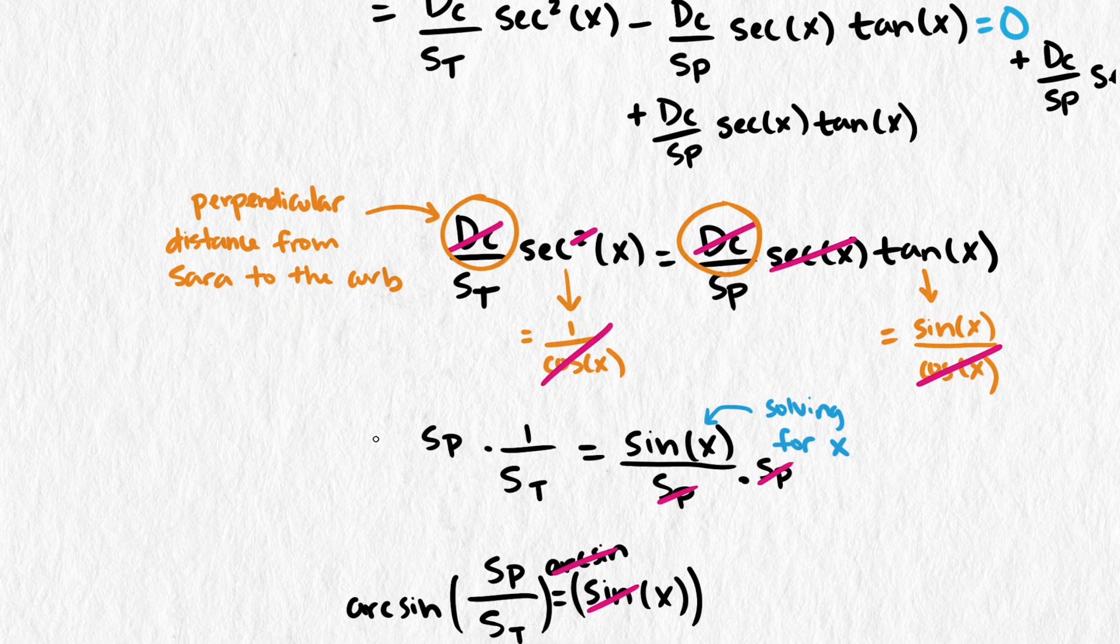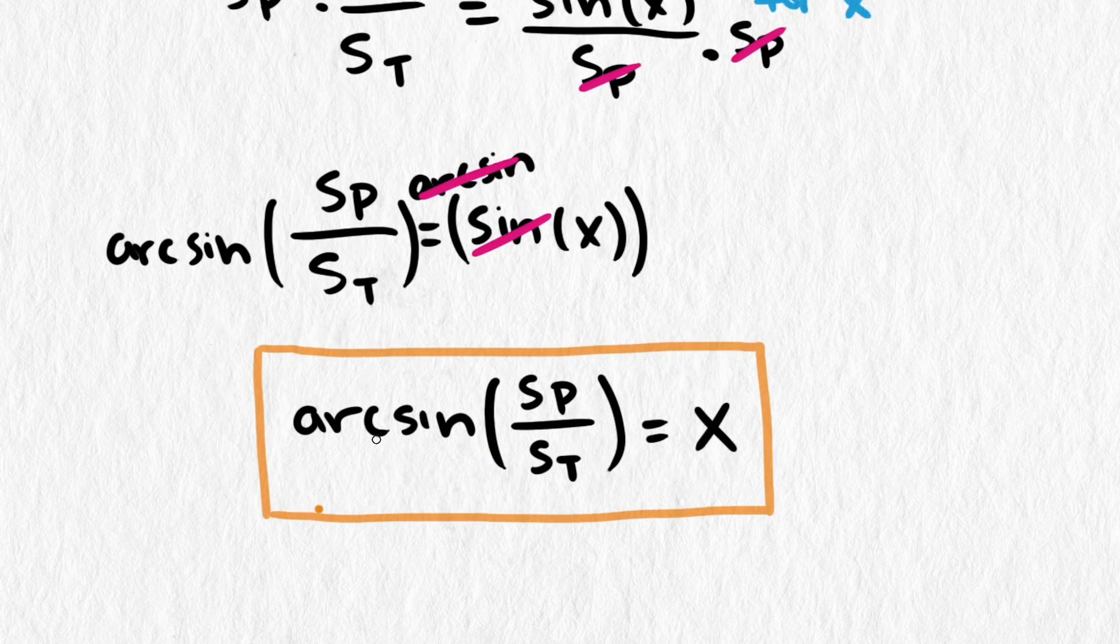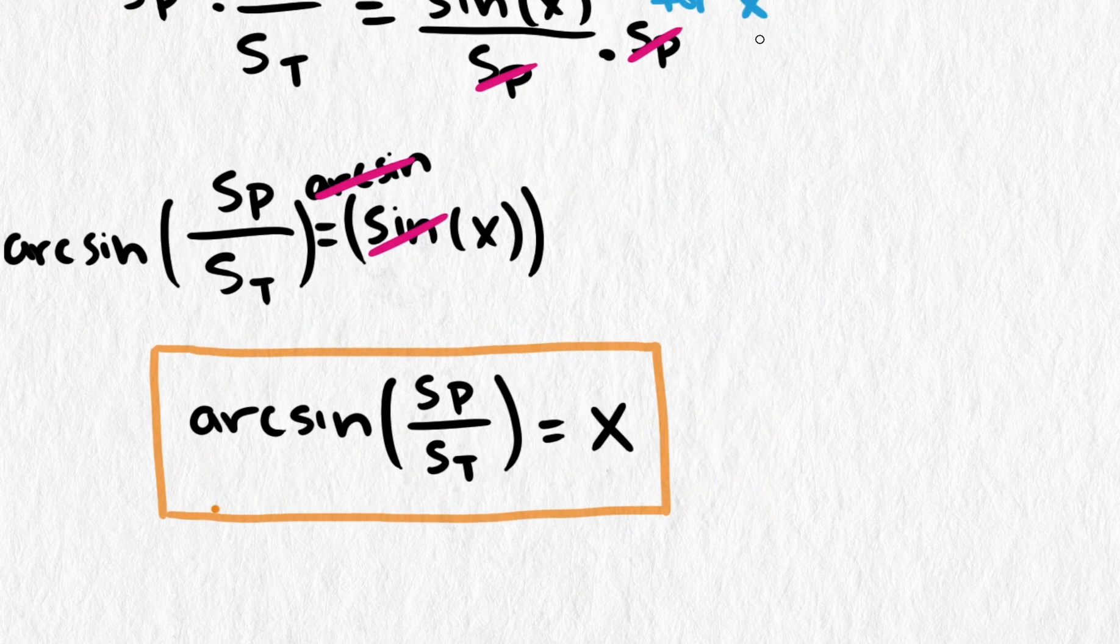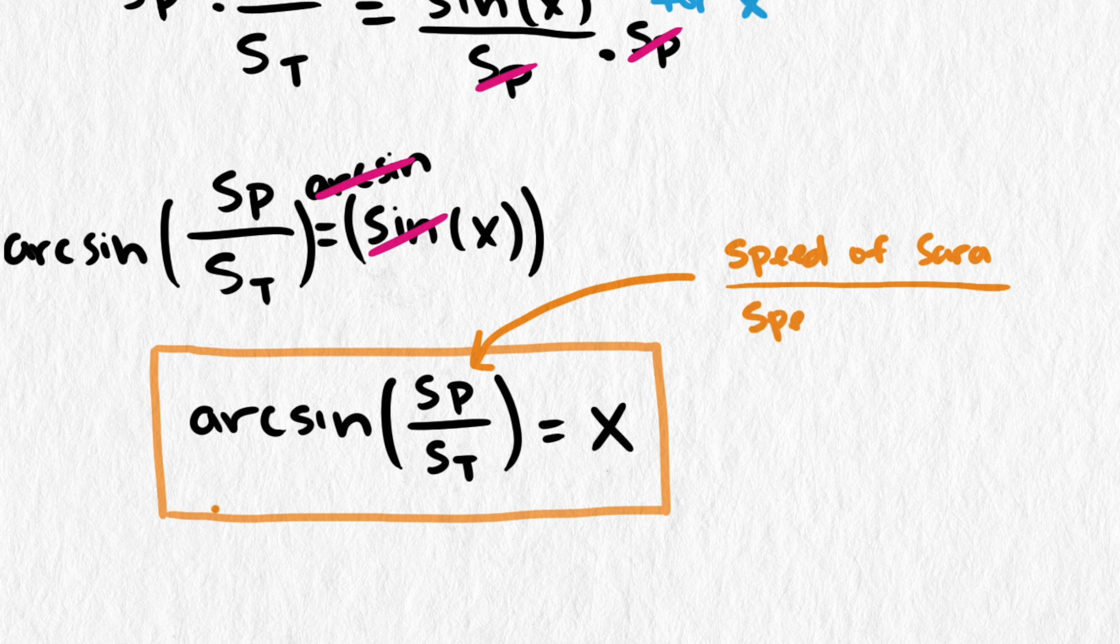Finally, we end up with a simple formula for the optimal angle. x equals the arc sine of the pedestrian speed divided by the speed of the truck. Turns out only the speeds determine the optimal angle, but it is even easier than that. Only the ratio of the speeds matter, or the relative speeds matter. If the pedestrian speed is half the truck speed, it doesn't matter what the actual speeds are. The optimal angle would be the same in those situations.